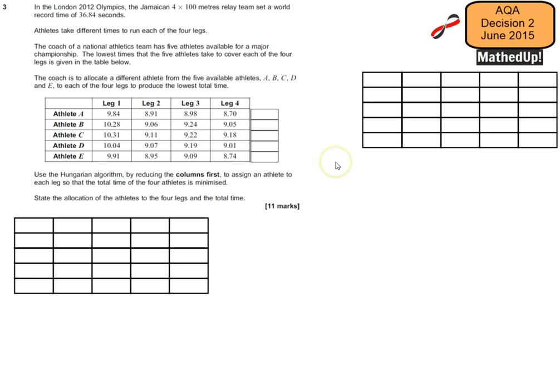So we're going to have an extra column over here and I'm going to label that as a dummy. So in my dummy column, I need to find the highest value in this matrix and I'm going to put that in each of the elements of my dummy column. So that's going to be 10.31 and that's going to go in each of these.